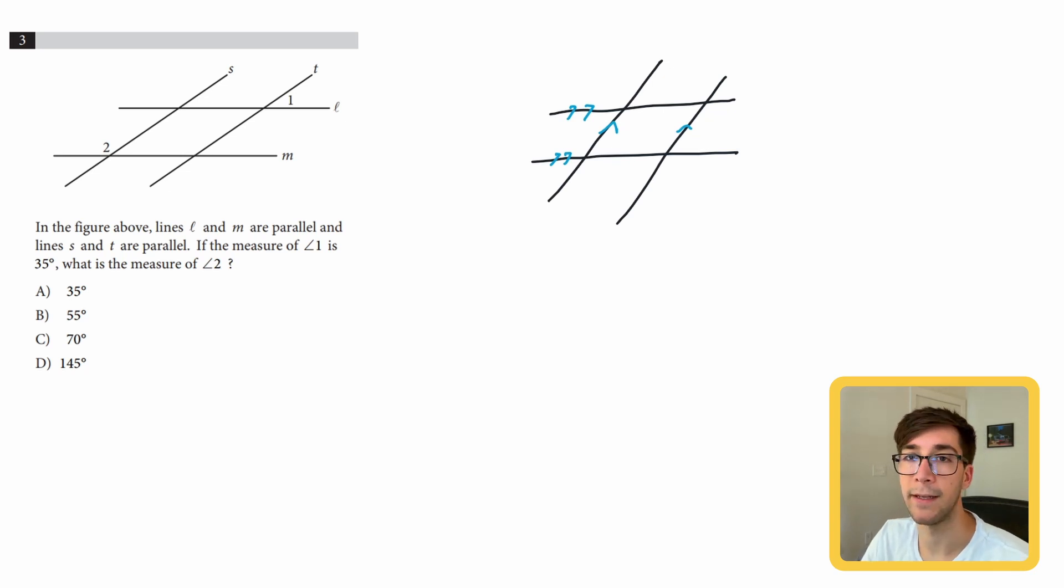First angle rule we want to talk about is vertical angles. So if we have this angle up here in the top right, the light blue, we know that the angle right diagonal from it right here is the same angle. So angles that are diagonal from each other are called vertical angles, and they are the same. So that also goes for these angles right over here. So this one's red. This one is also a red angle. So we know all those angles up there.